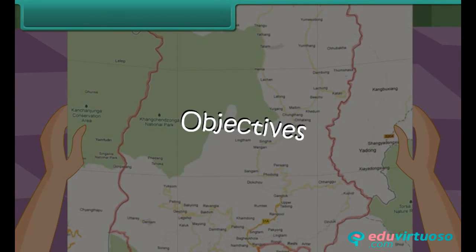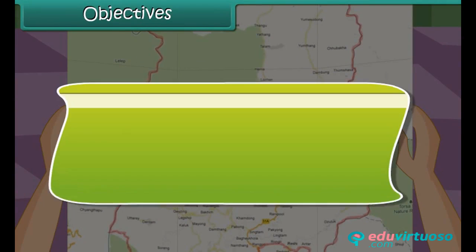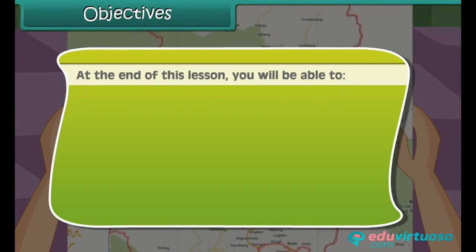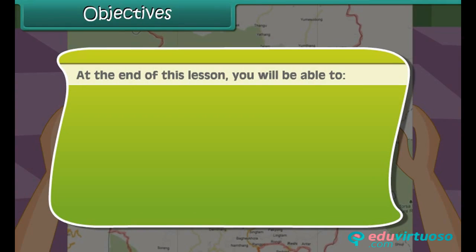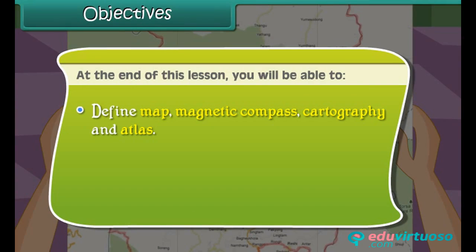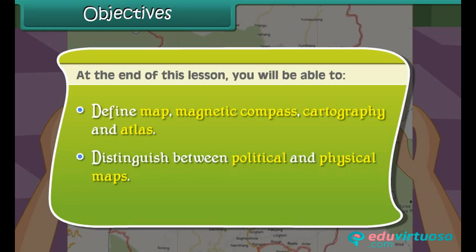At the end of this lesson you will be able to: define map, magnetic compass, cartography and atlas, and distinguish between political and physical maps.